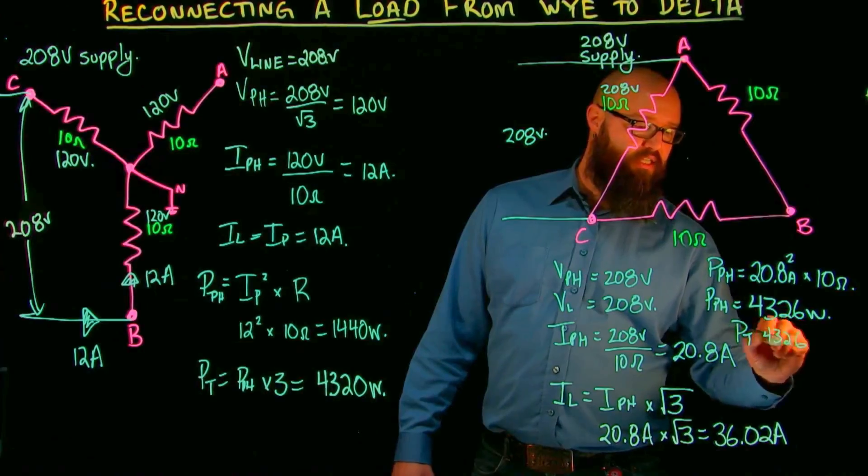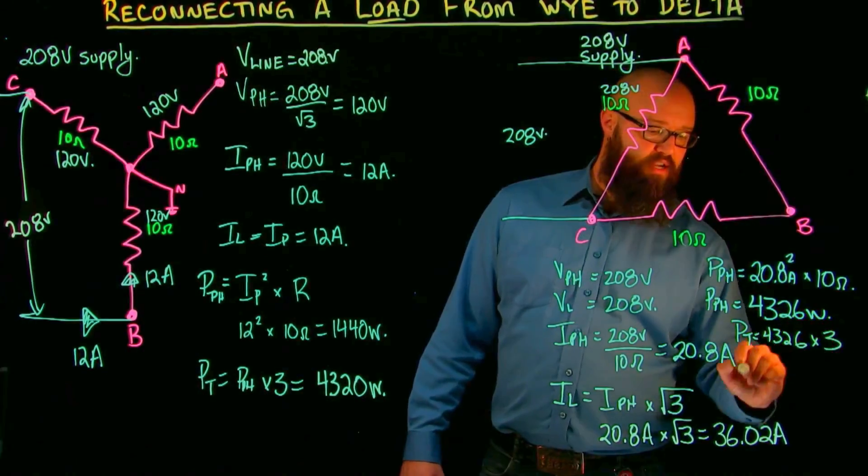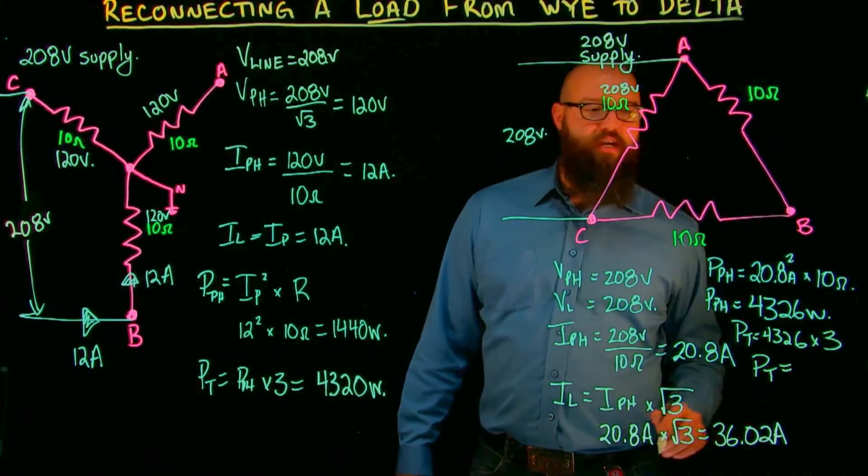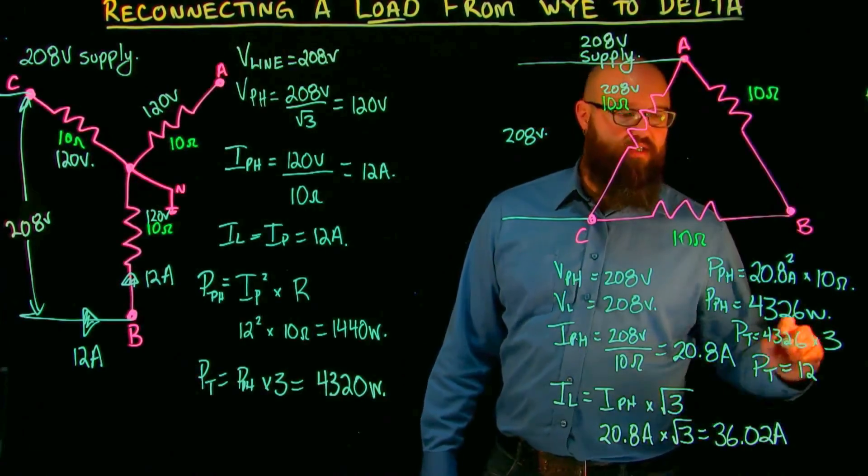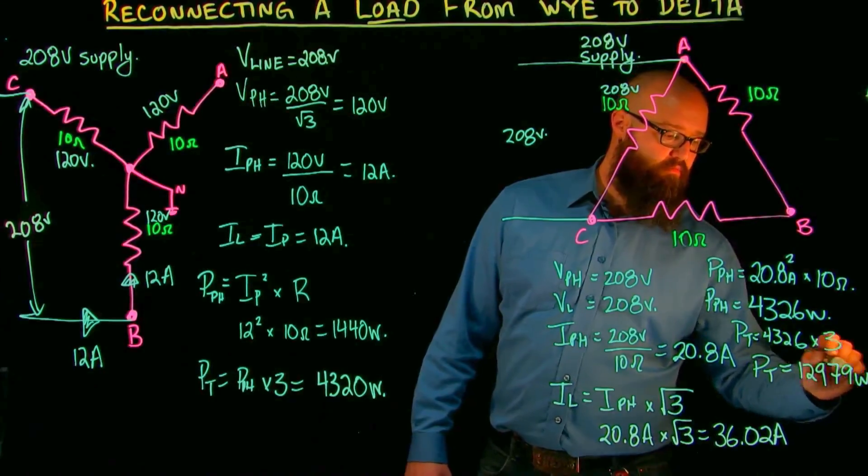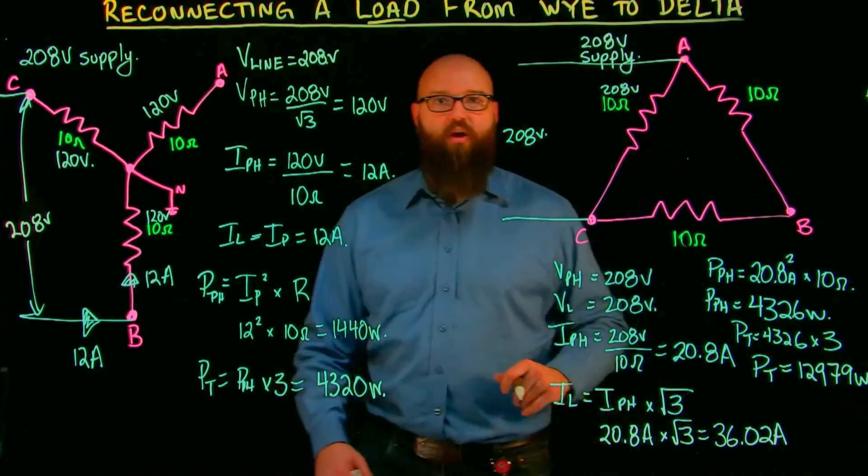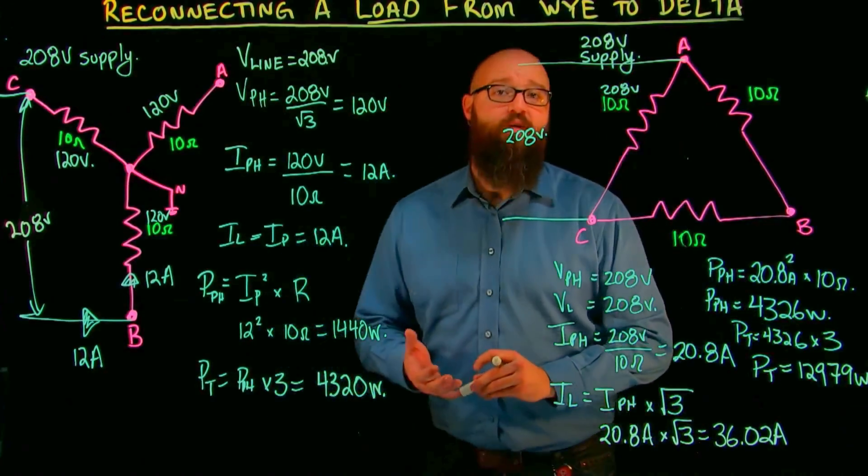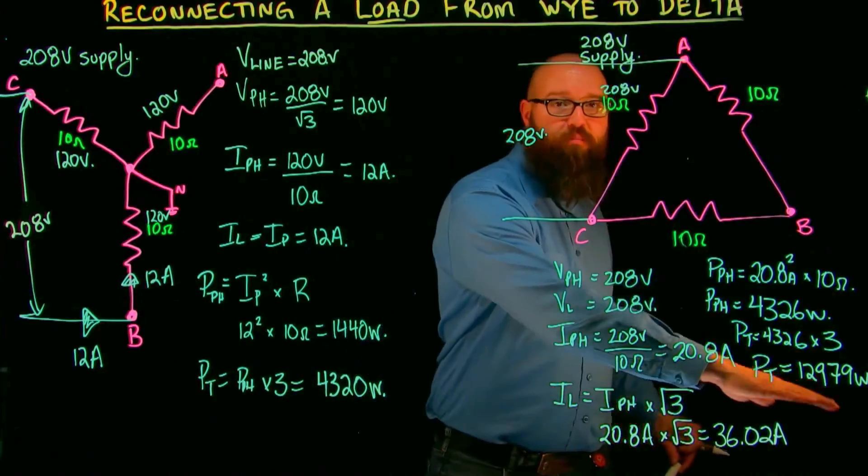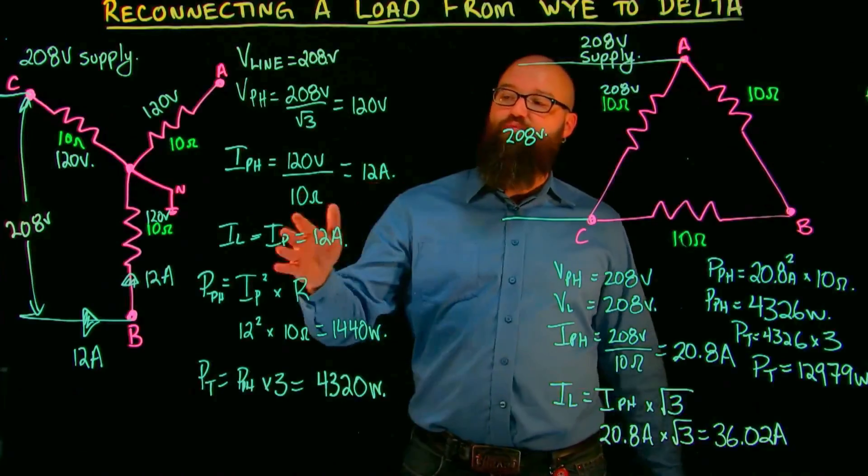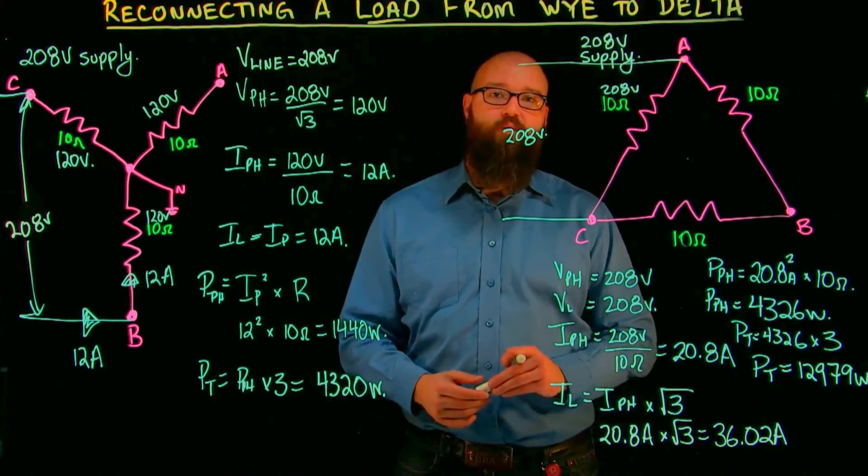Times three, power total we end up with somewhere around 12,979 watts, depending on rounding. You end up with a slightly different number, but it should be somewhere close to that. What we really notice is the power dissipated when it's connected in delta is three times larger than it was when it was connected in Y.